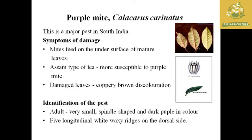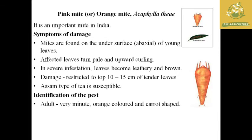The purple mite is a major pest of tea in South India. The mite feeds on the underside of mature leaves, and the Assam type of tea is most susceptible. Damaged leaves show a coppery-bronze discoloration. The adult is very small, spindle-shaped, and dark purple in color, with five longitudinal white waxy ridges on the dorsal side.